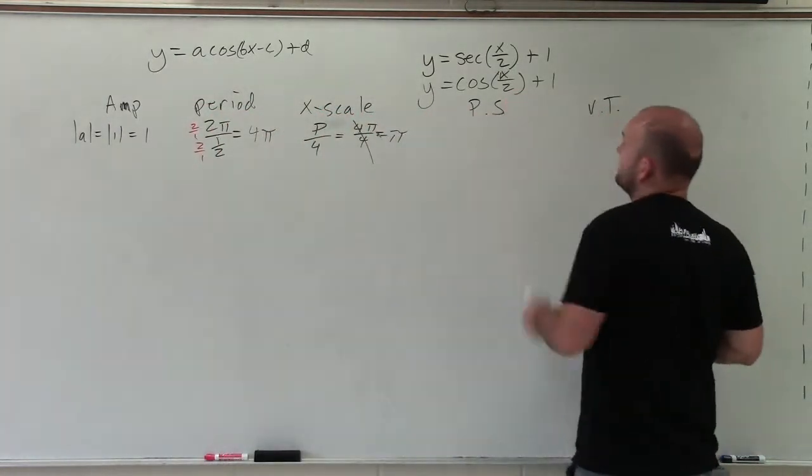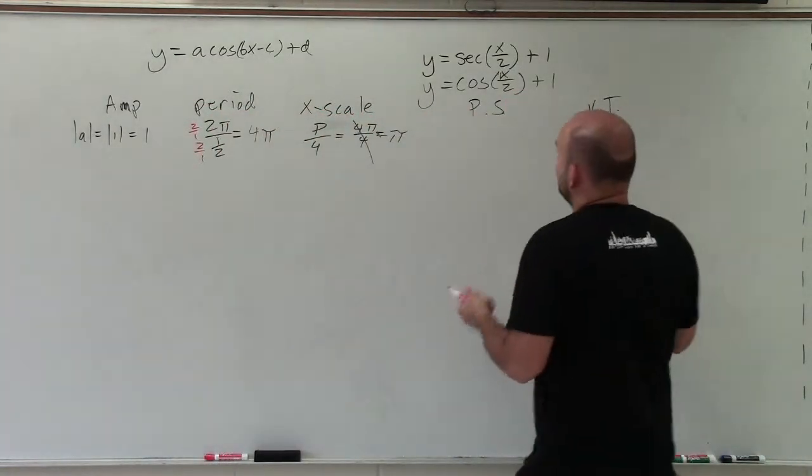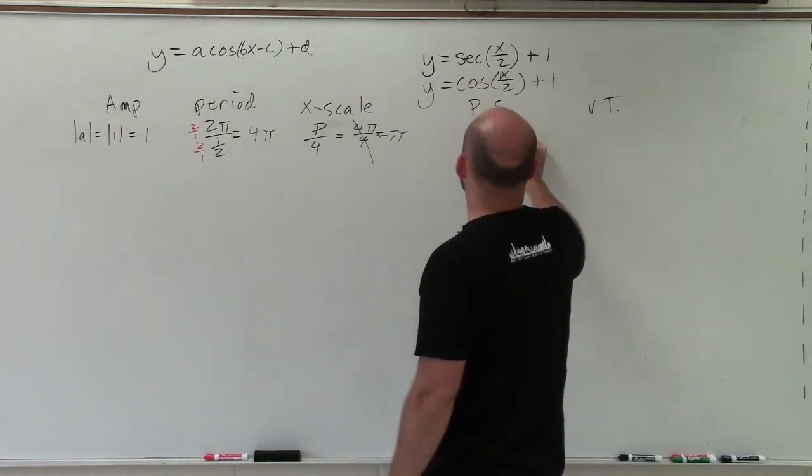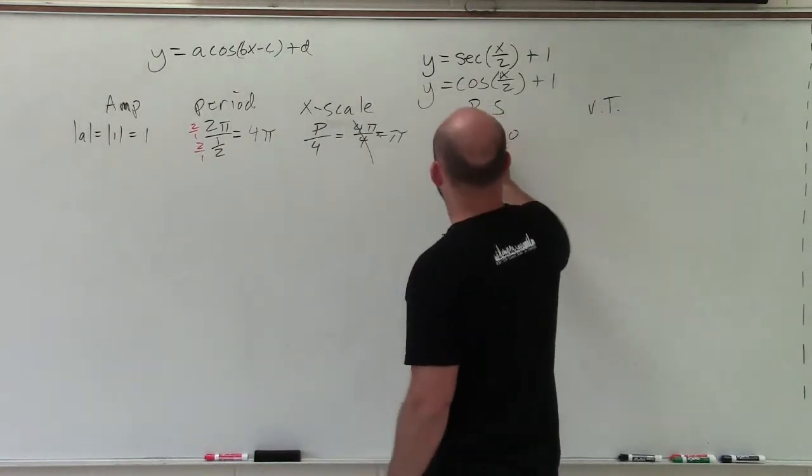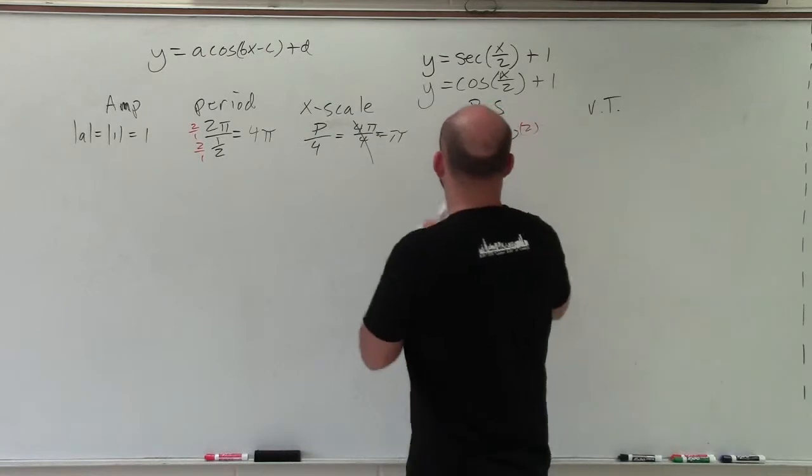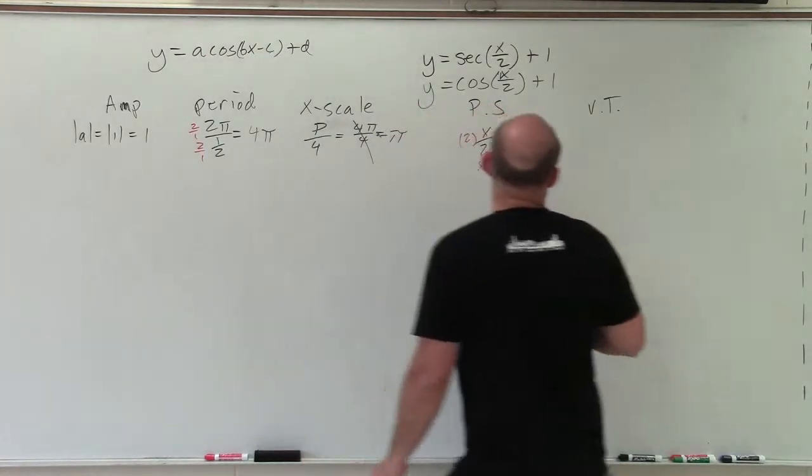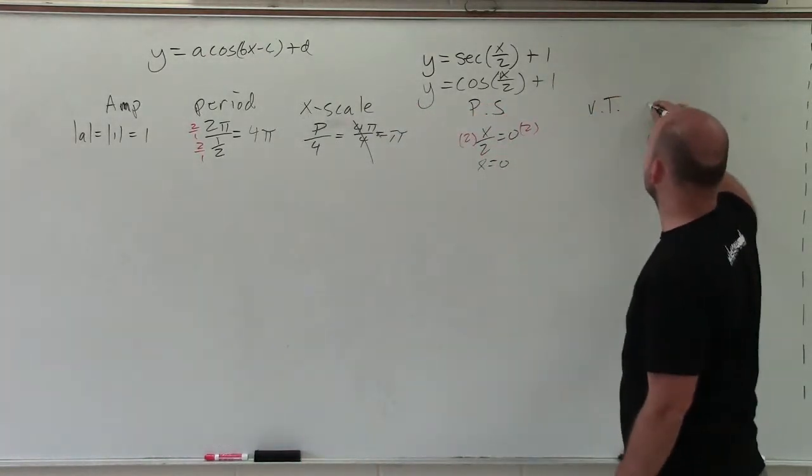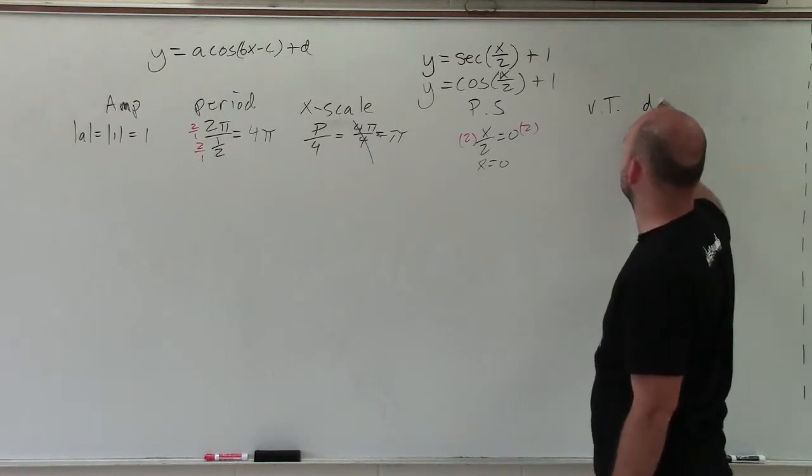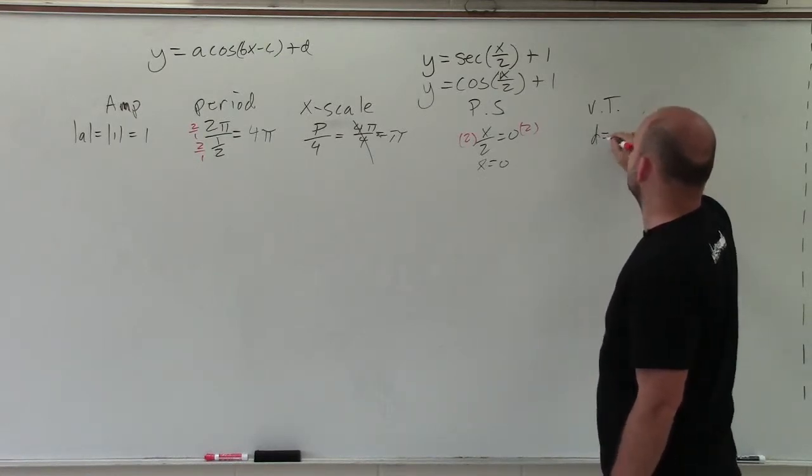Phase shift, all you do is take whatever's inside the center and set it equal to 0. So I say x divided by 2 equals 0. Multiply by 2 on both sides. x equals 0, and vertical transformation is just your d, which in this case, d is equal to 1.